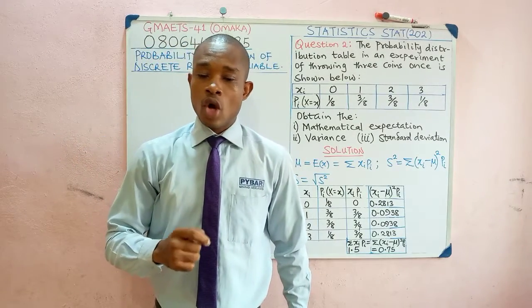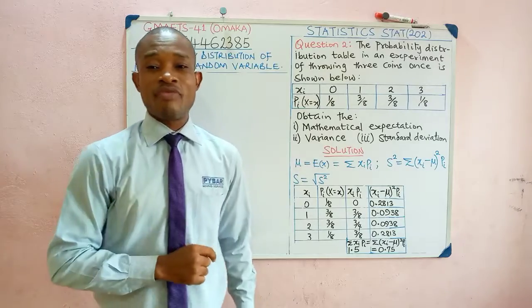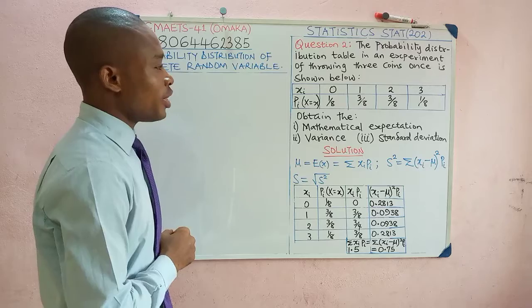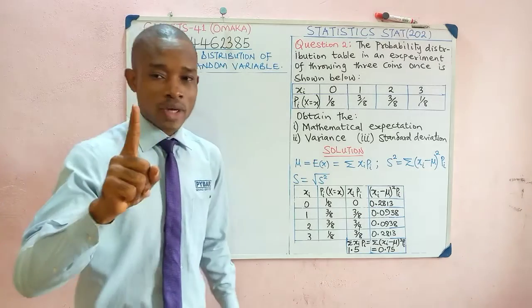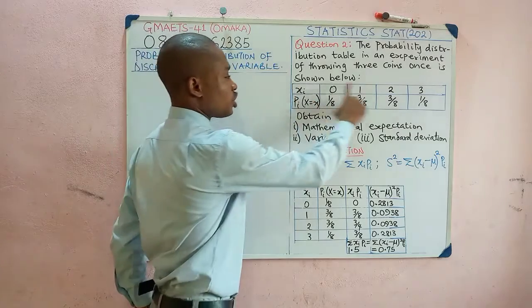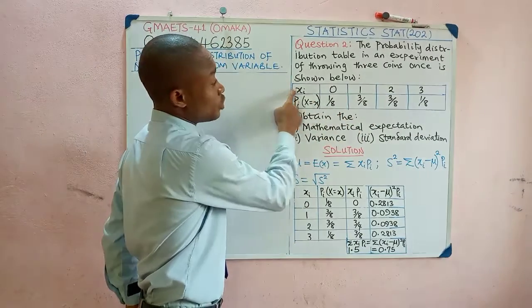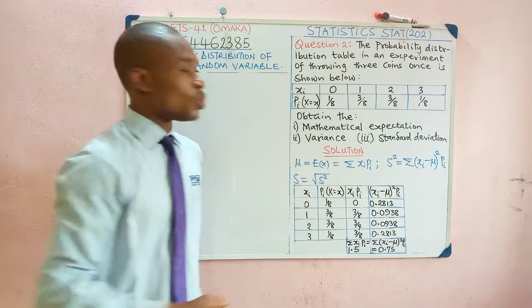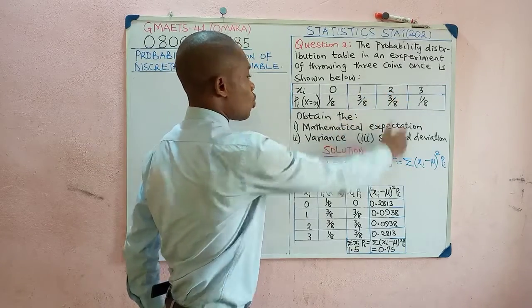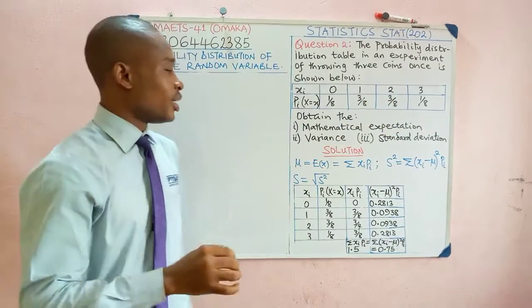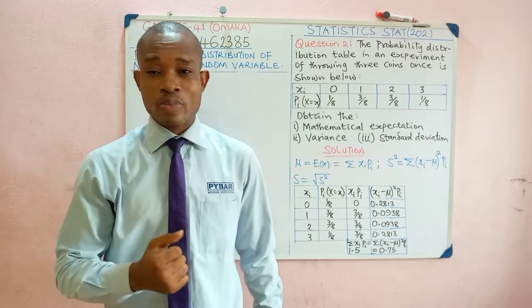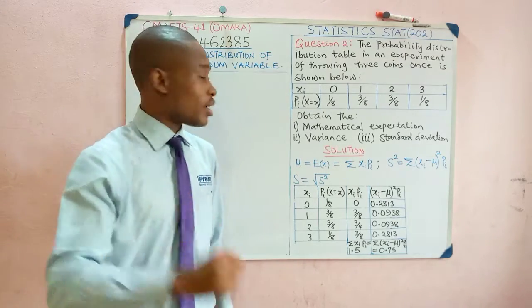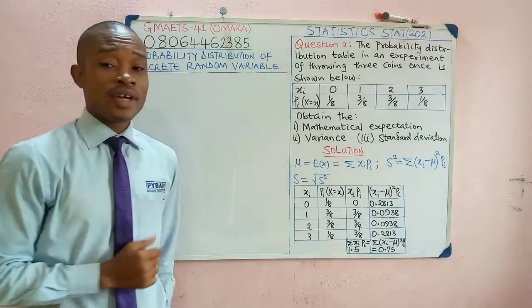In this video, we have a question on probability distribution of a discrete random variable. The probability distribution table in an experiment of throwing three coins once is shown. We have the values of the variable from zero to three, with corresponding probabilities: one-eighth, three-eighths, three-eighths, and one-eighth. We are required to obtain the mathematical expectation, also known as the expected value or mean, and determine the variance and standard deviation.